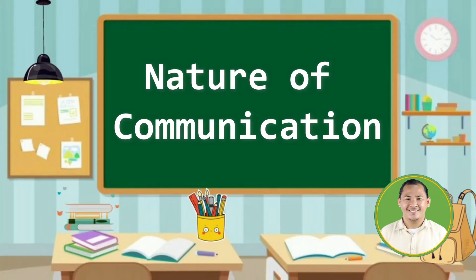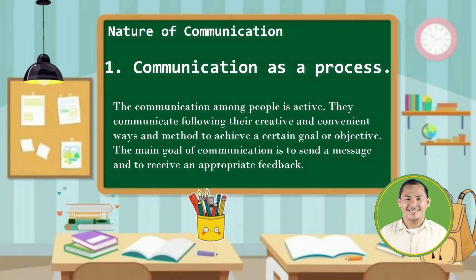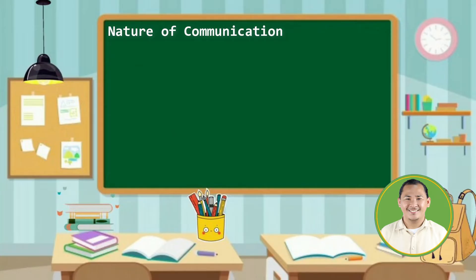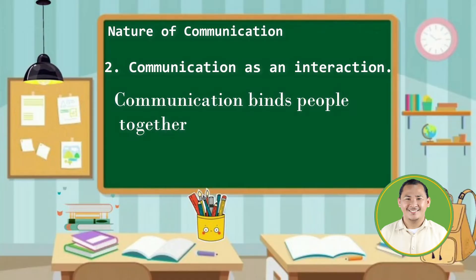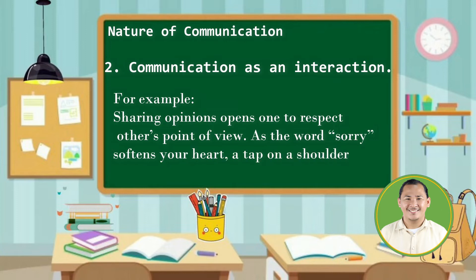Now here are the natures of communication. Number one, communication as a process. The communication among people is active. They communicate following their creative and convenient ways and methods to achieve a certain goal or objective. The main goal of communication is to send a message and to receive an appropriate feedback. For example, greeting a person about his or her mood first before beginning a conversation can be the beginning of the process. Number two, communication as an interaction. Communication binds people together. Their interaction with one another connects their understanding. For example, sharing opinions opens one to respect others' point of view. As the word sorry softens your heart, a tap on a shoulder can pacify a needy person.